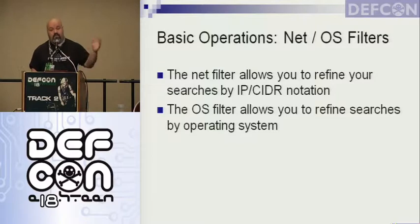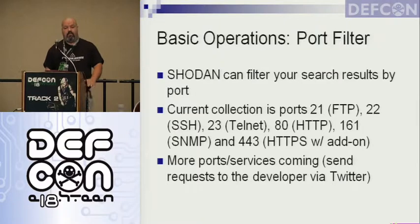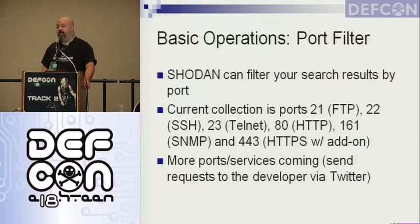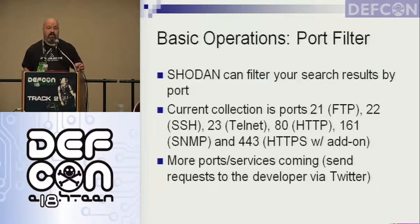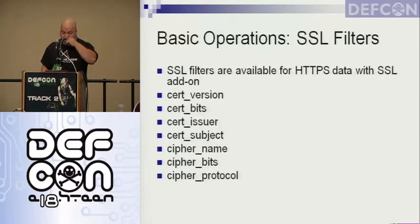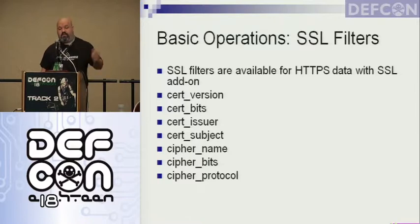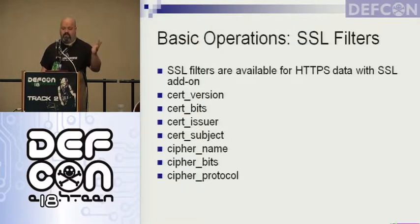The OS filter lets you search for a specific operating system. You can also filter by port. The current collection covers FTP on port 21, SSH on 22, Telnet on 23, HTTP on 80, SNMP on 161, and recently added is HTTPS data on port 443 — though that data is only available through an add-on that requires credits. The SSL filters available with the SSL add-on let you search for specific information in the certificate or cipher being used — version of SSL or whatever certificate information you're looking for.